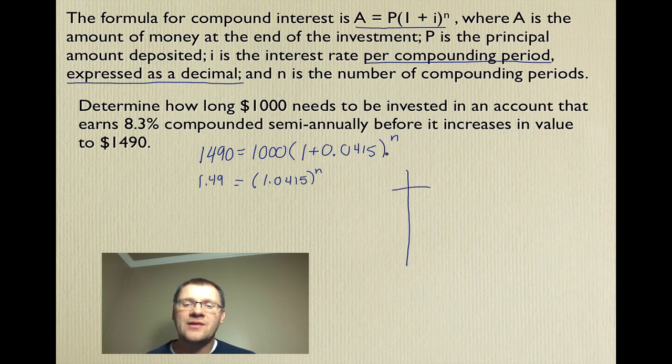So if we make a little table of values, we plug in a value for n and we should get an answer. And that answer needs to be as close to 1.49 as we can make it. So I chose a number of values. I went 2, 4, 6, 8, 10. And by the time I got to 10, I found that my answer was 1.50.